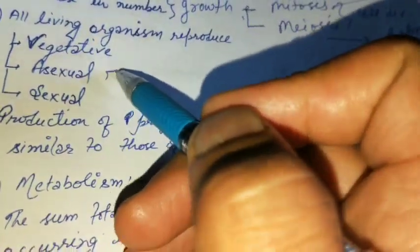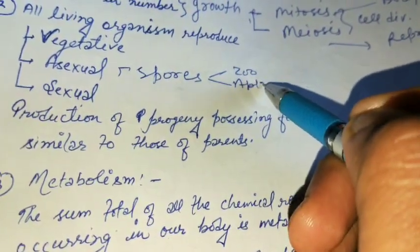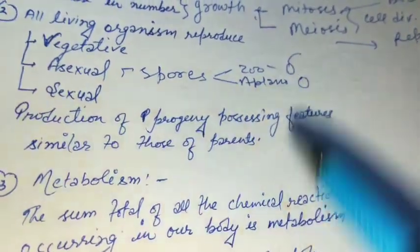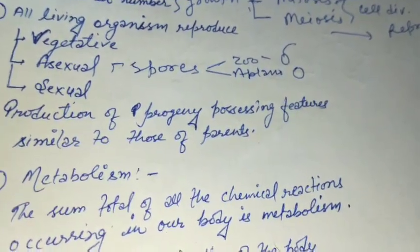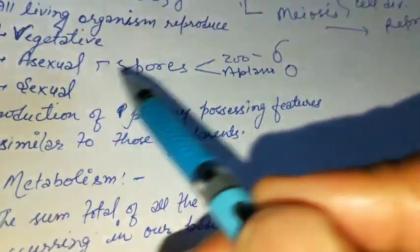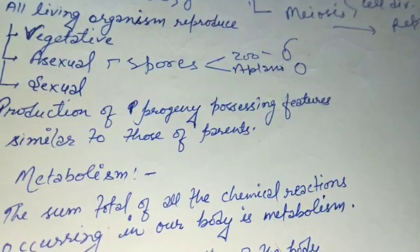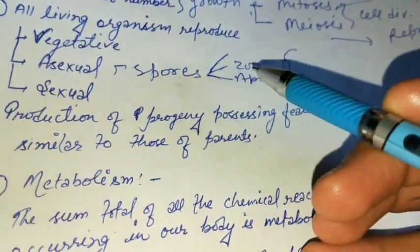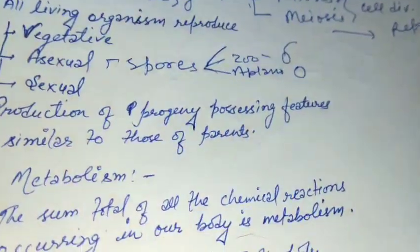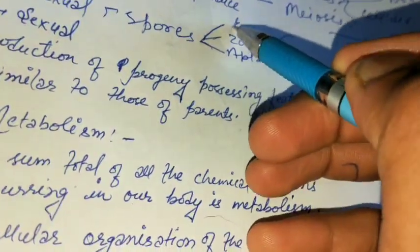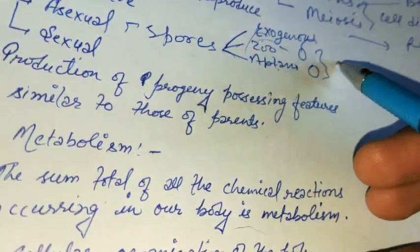Asexual reproduction is usually by spores. There are many types of spores: zoospores, which are always motile, and aplanospores, which are always non-motile. Spores are produced within a specific cell called a sporangia. If zoospores are found, the cell is called a zoosporangia; if aplanospores are formed, the cell is called an aplanosporangia. Sometimes spores are produced outside the sporangia — these are called exogenous spores. When produced inside the cell, they are called endogenous spores.